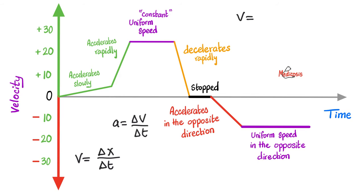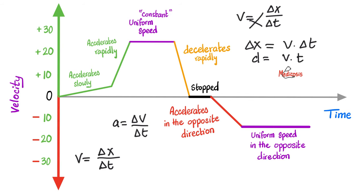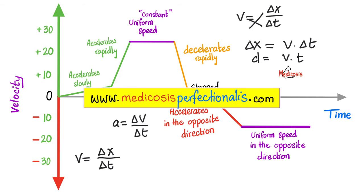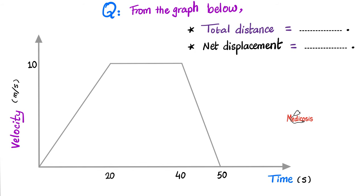Remember that velocity equals displacement over time, which means you can do cross multiplication: displacement equals velocity multiplied by time. How about distance? Distance equals speed multiplied by time. So let's practice from this graph. Please find out the total distance traveled and the net displacement. Please pause and try to solve this yourself. Now let's divide this shape into triangles and rectangles to make the calculations easy.